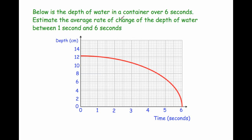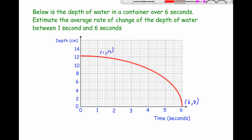Our last example shows the depth of water in a container over six seconds. At zero seconds the container has just over 12 centimeters of water, and by six seconds it's empty — the water is draining out. The question says: estimate the average rate of change of depth between one second and six seconds. At one second the coordinate is (1, 12) — 12 centimeters of water. At six seconds the coordinate is (6, 0) because it's empty. We join those points and find the gradient of the chord.